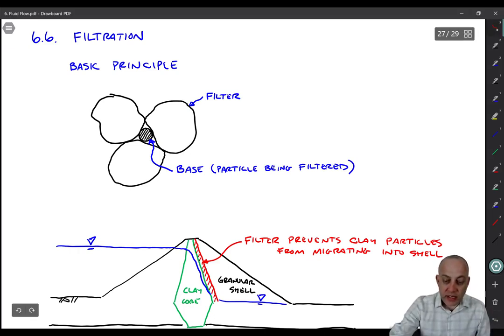The basic idea is illustrated here. You've got the filter particles, which are going to be the larger ones. The filter is always going to be having coarser grain size than the base. And the base particle is shown there. That's going to be the finer-grained material that the filter is constructed next to that we're trying to drain. So the base is just the particle or the grain of the soil being filtered.